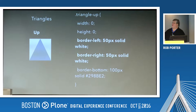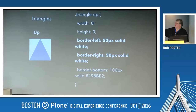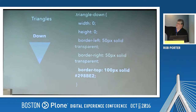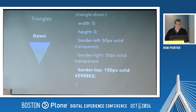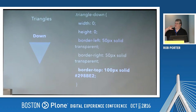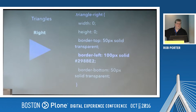Likewise, for triangle down, the main part of it is in the top facing down. So the other two are transparent and then the top is the color. And if we want to move it to the right, the main amount of color is on the left-hand side, and then the other two are transparent — the top and the bottom.